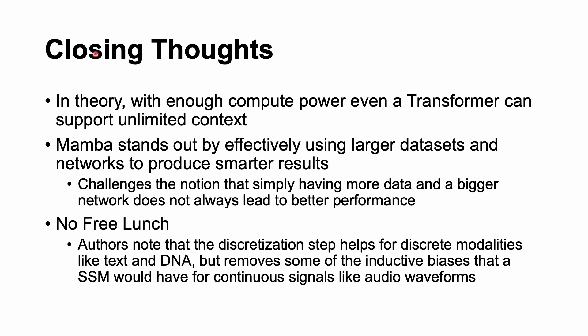My closing thoughts. So in theory, with enough compute power, even a transformer can support unlimited context. But Mamba stands out effectively by using larger datasets and networks to produce smarter results. So rather than having more data in a bigger network, that doesn't always guarantee better performance. Mamba actually argues that you can have really great performance with a simple model. We should also consider that no-free-lunch concept where there are a little bit of limitations.